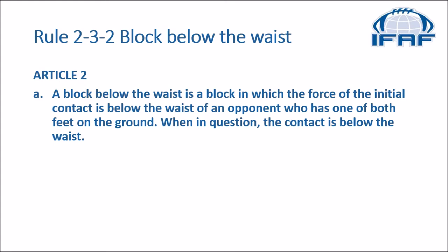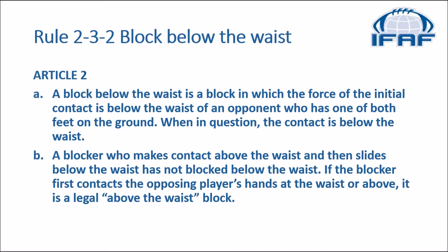Before we get to the game film, let's look at what the MOFO and the rule book have to say. In the rule book we start with rule 2-3-2, defining block below the waist: a block below the waist is one in which the force of the initial contact is below the waist of an opponent who has one or both feet on the ground. When in question, the contact is below the waist. A blocker who makes contact above the waist and then slides below has not blocked below the waist. If the blocker first contacts the opponent's hands at the waist or above, it is a legal above-the-waist block.